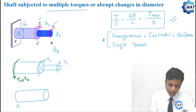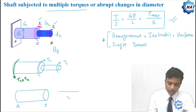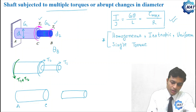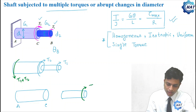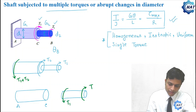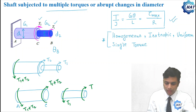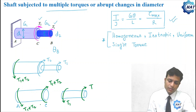The two parts are: A to C, and C to B. The torque on part C to B is T1, whereas for part A to C the torque is T1 plus T2. This is the free body diagram of the two parts.